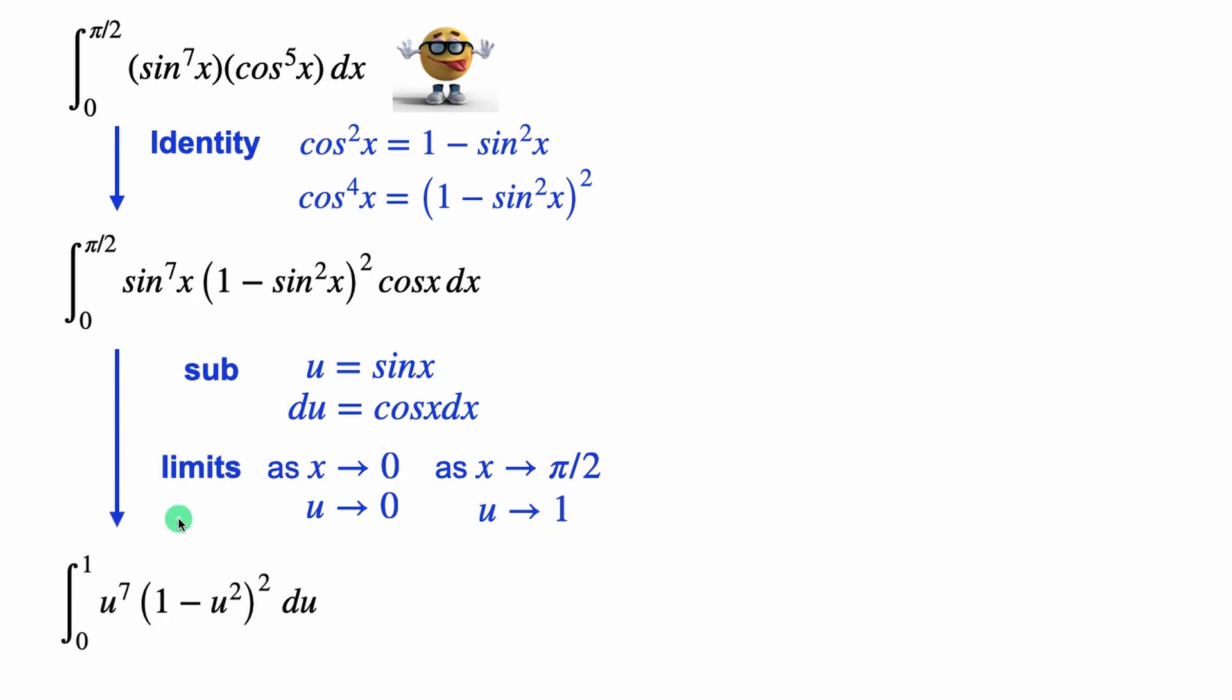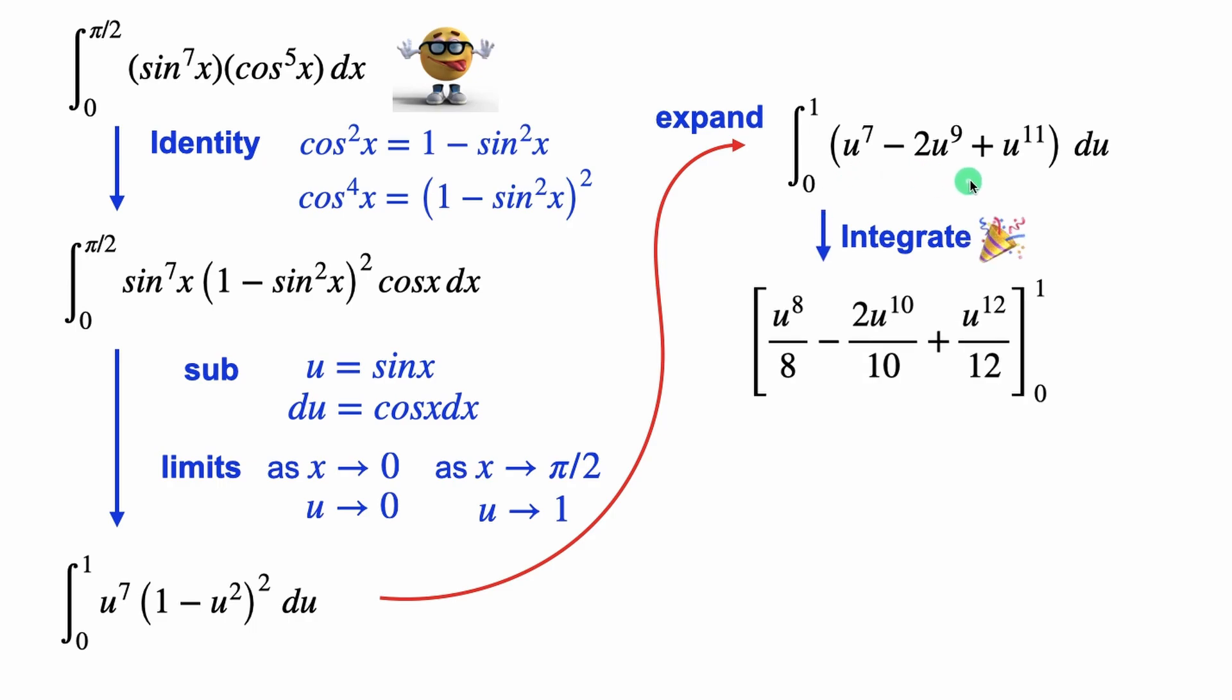Okay, now if we substitute that in, things look a lot simpler, and we're almost there. Now we can't integrate these directly, but because this is like a polynomial, we can expand the brackets, we can foil it out, that sort of thing, and if you do that, then we're left with individual terms, and at this point, we can reverse power rule each of the terms.